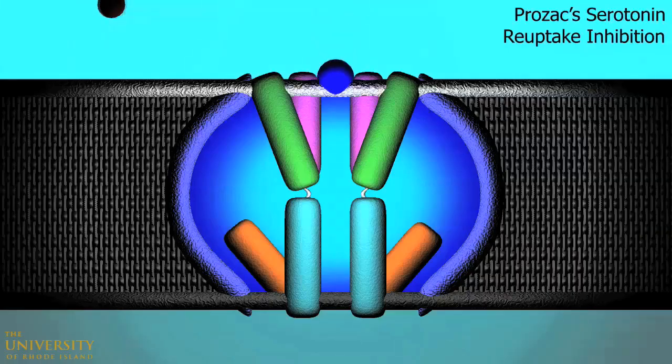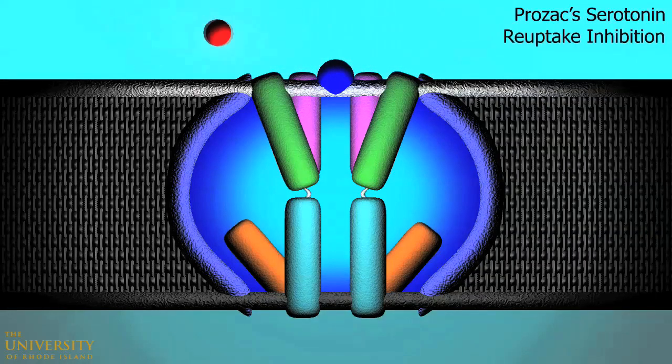Returning to the detailed view of the reuptake protein, Prozac's disabling effects are clear. Serotonin molecules are denied entrance and the gating mechanism cannot proceed.